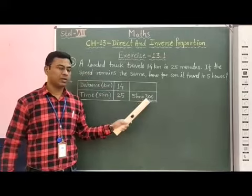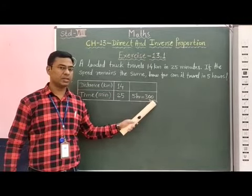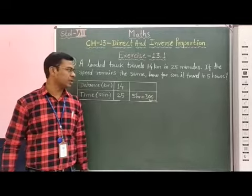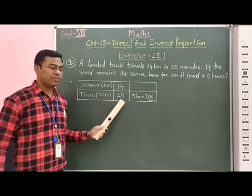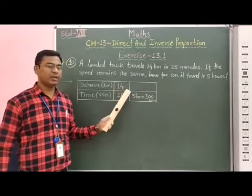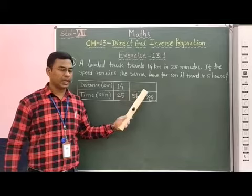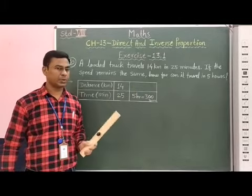Therefore, here, we can consider in place of 5 hours, we consider 300 minutes. Now, students, here, if time increases, then distance travel by the truck will also increases. Therefore, it is example of direct proportion.